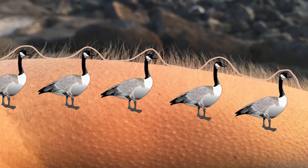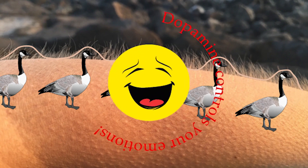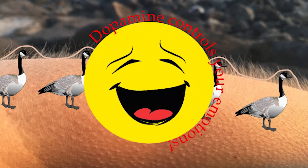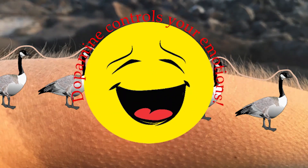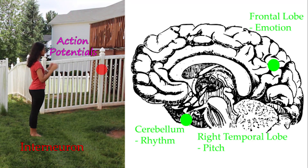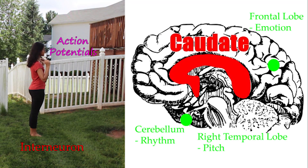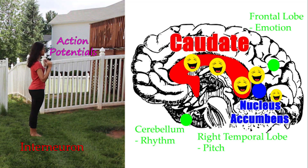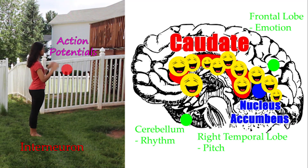But what does any of this have to do with those goosebumps I get listening to Beethoven? Well, you can thank the neurotransmitter dopamine for that. The action potentials that the interneuron sends go to many parts of the brain. The ones responsible for the chills are the caudate and the nucleus accumbens, which release a ton of dopamine.